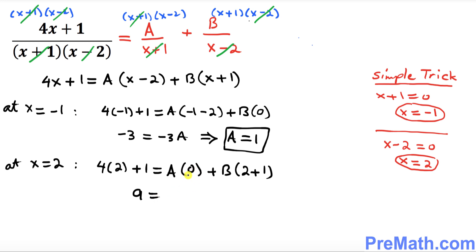So that's gonna be 8 plus 1 makes 9. This is equal to 3B, which tells us that B equals 3.